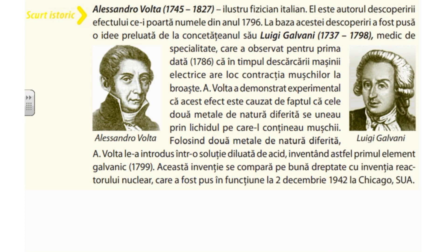Alexandru Volta, ilustru fizician italian, este autorul descoperirii efectului ce-i poartă numele din anul 1796. La baza acestei descoperiri a fost o idee preluată de la concitățeanul său Galvani, medic de specialitate, care a observat pentru prima dată că în timpul descărcării mașinii electrice are loc contracția mușchilor la broască. Volta a demonstrat experimental că acest efect este cauzat de faptul că cele două metale de natură diferită se uneau prin lichidul conținut în mușchi. Folosind două metale de natură diferită, Volta le-a introdus într-o soluție de acid, inventând astfel primul element galvanic, în 1799.